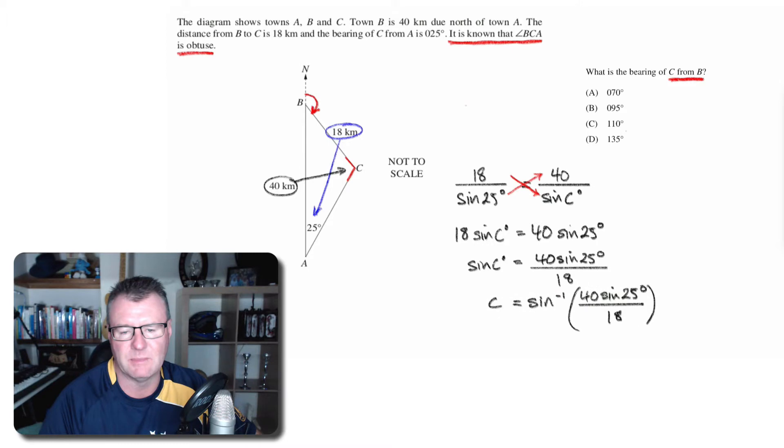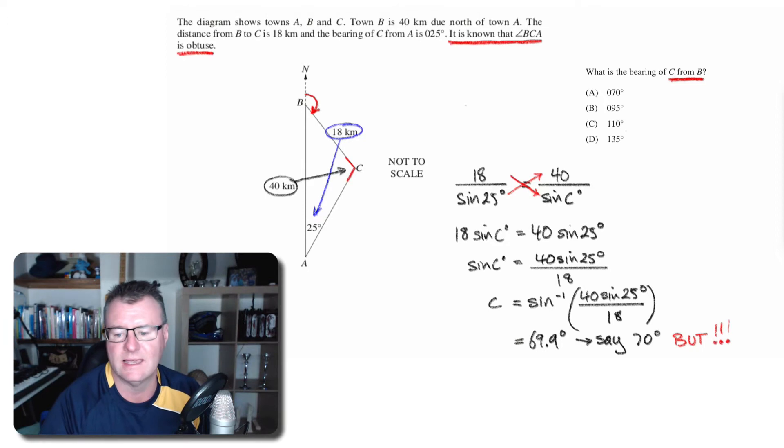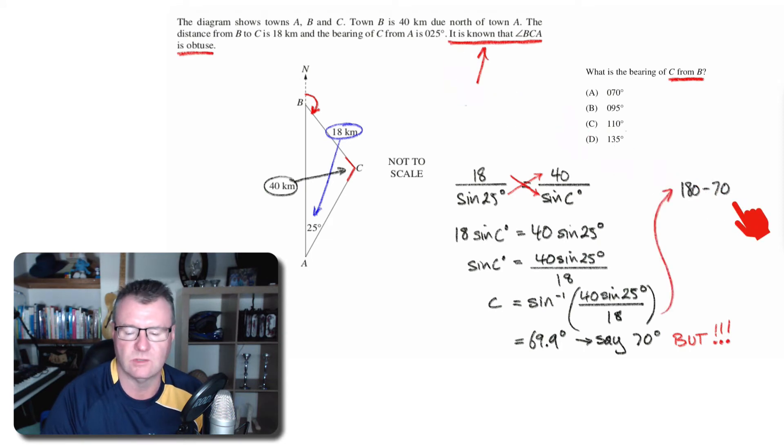That's something I'm putting in my calculator and I get 69.9, so let's say 70 degrees. Now hold on—before you get too excited and think yes, angle BCA is 70 degrees, we're told in the question that that angle is obtuse, which means it must be more than 90. So I have to take that 70 away from 180 to get my obtuse angle. So 180 minus 70 means that that angle is in fact 110 degrees.